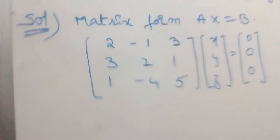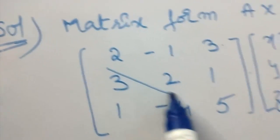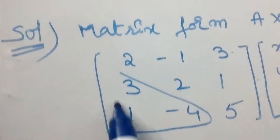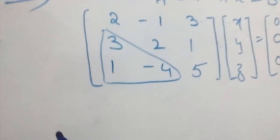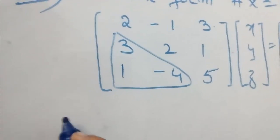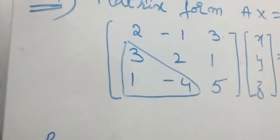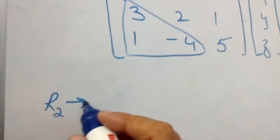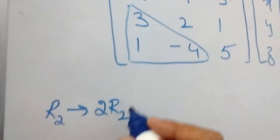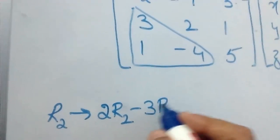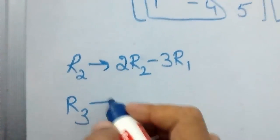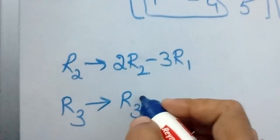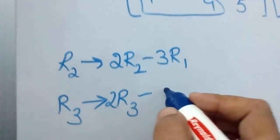We are going to reduce this to lower triangular form and check whether we have a trivial or non-trivial solution. The row operations applied are: R2 → 2R2 minus 3R1, and R3 → 2R3 minus R1.